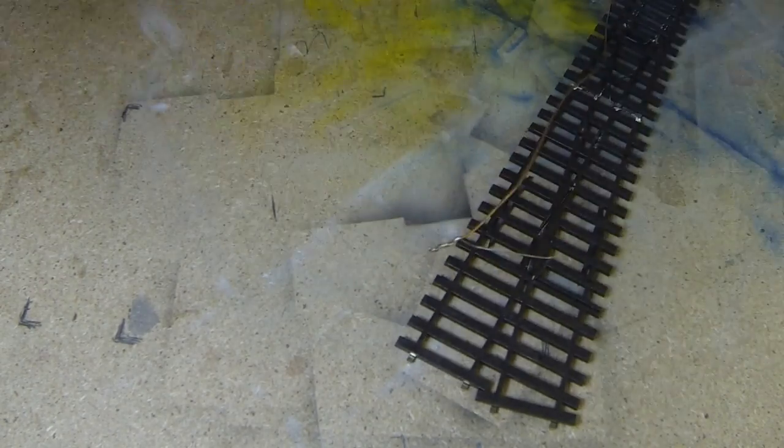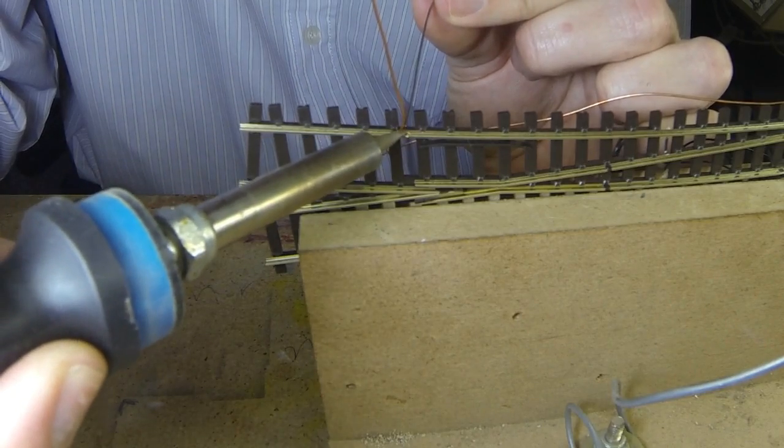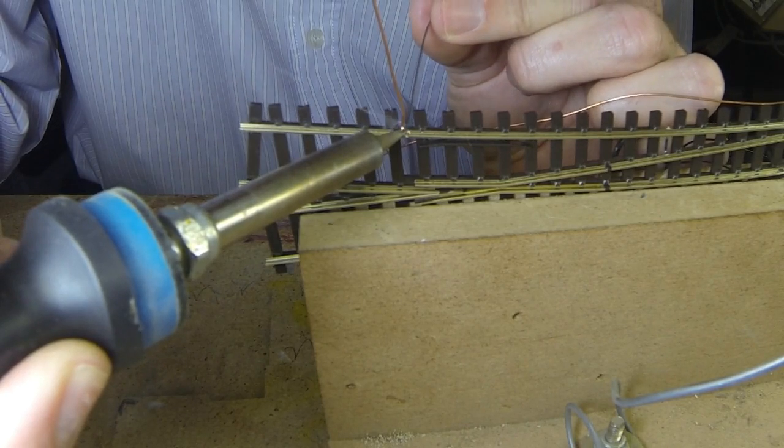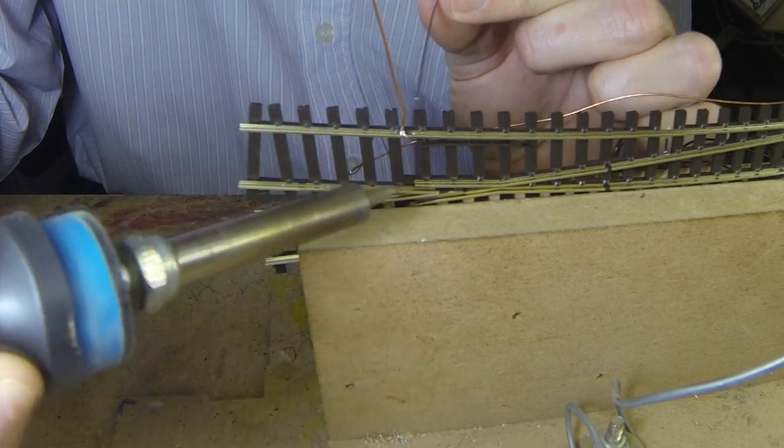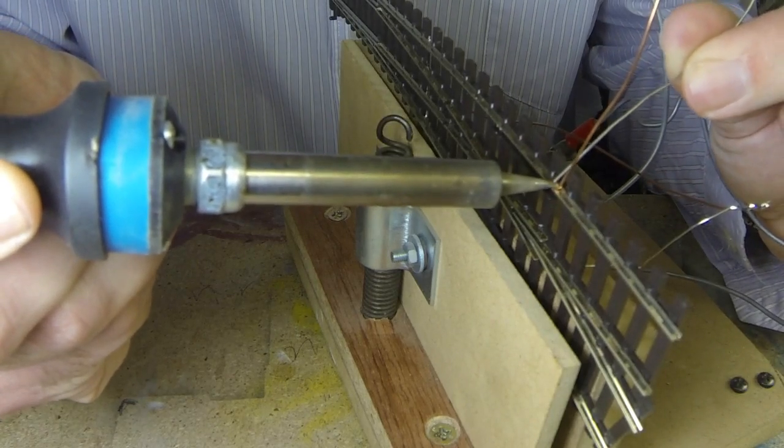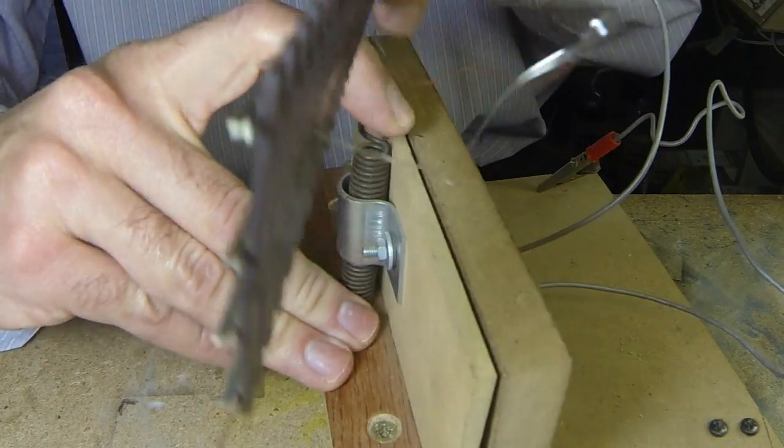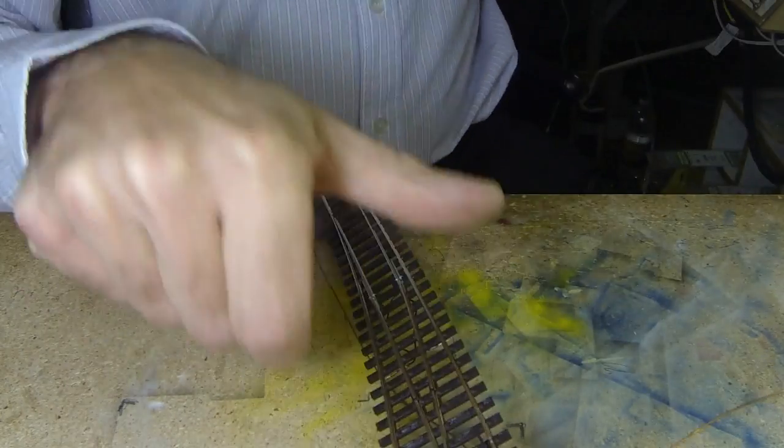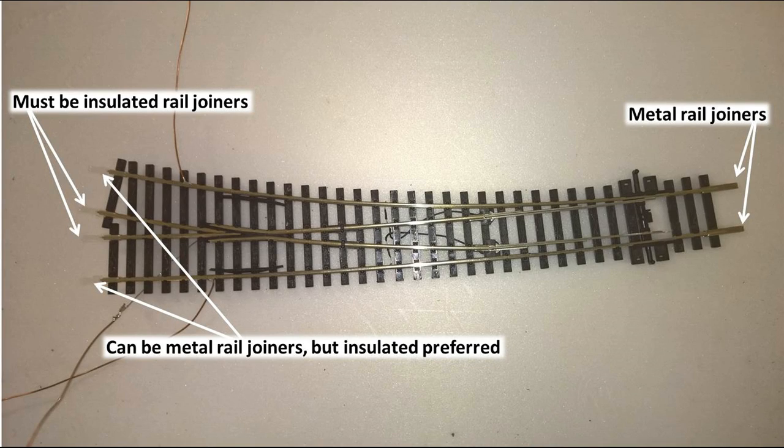I like to add dropper wires to each section of track that I put down and therefore I will put droppers onto my two stock rails, but you can just rely on the connectors to transfer power to the stock rails. Because the frog polarity changes all the time, you have to use insulating rail joiners on the frog ends. The other ends can have steel rail joiners.